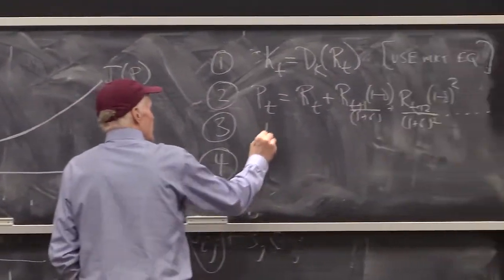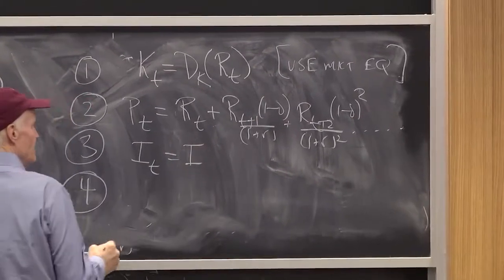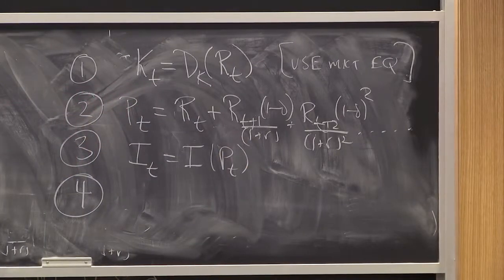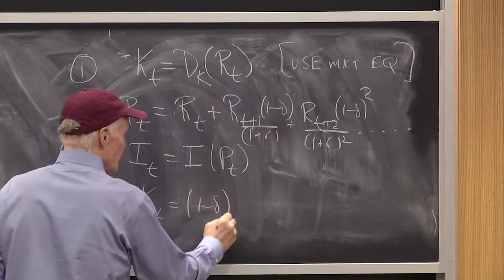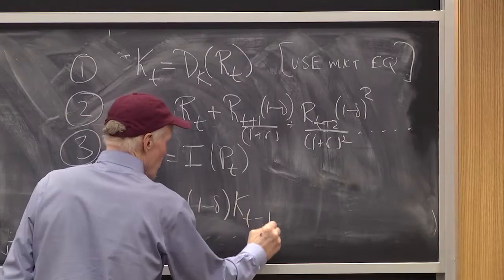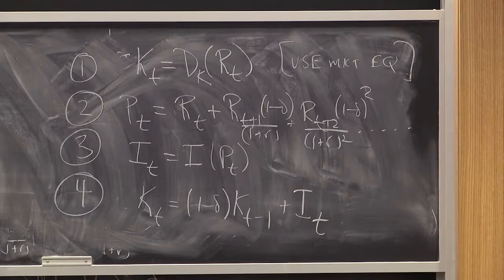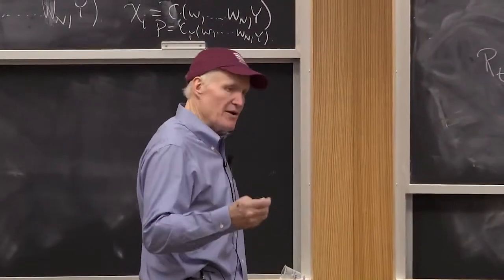Equation three: the amount we build today — the amount of these assets we produce — depends on the capital price. And equation four: the amount of assets we have today was one minus delta times K_{T-1} plus I_T. Those are really the four equations we have. It's nice that we have four equations because we've got four unknowns: I, K, P, and R.